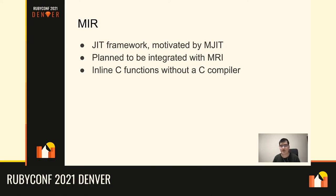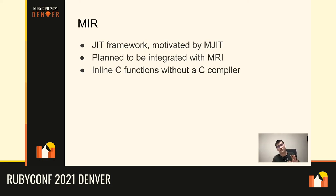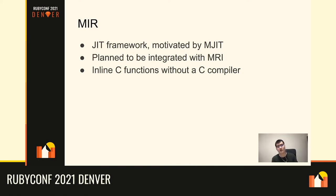We still don't have any actual integration of MIR into MRI — by the way, I call CRuby as MRI in this presentation. There's no working implementation of a CRuby JIT compiler using MIR yet, but the author plans to work on that later. One key characteristic of this JIT framework is that if you use it, you can inline C functions without the C compiler just by linking the library. This avoids invoking another process — unlike MJIT which executes the JIT compiler as a C compiler process and can have trouble with process interactions like process wait calls.